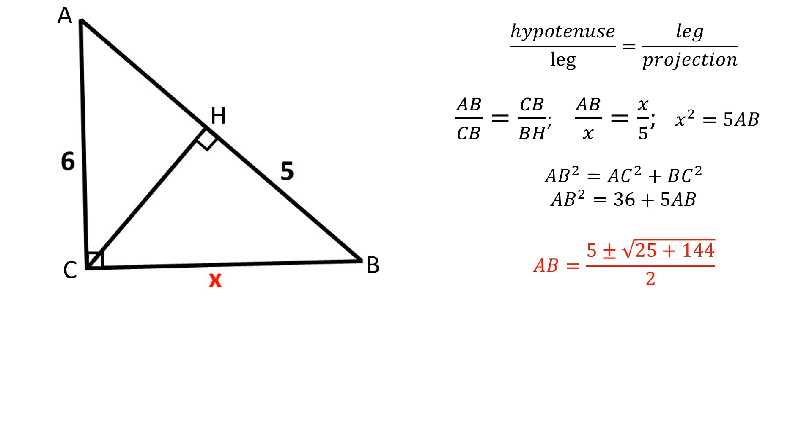The results of the quadratic equation are 9 and minus 4. The result of minus 4 is invalid since a negative side length is impossible and can therefore be ignored.